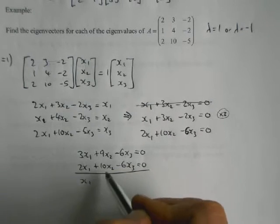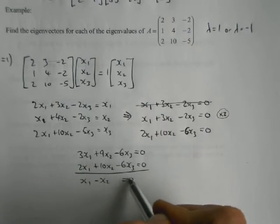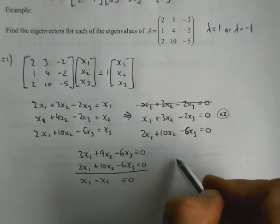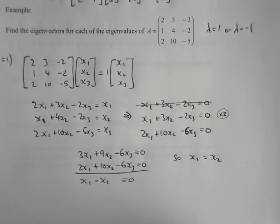And if I subtract these things, I get 3 minus 2 is 1, and 9 take away 10 is negative 1. So the implication is x1 has to equal x2.